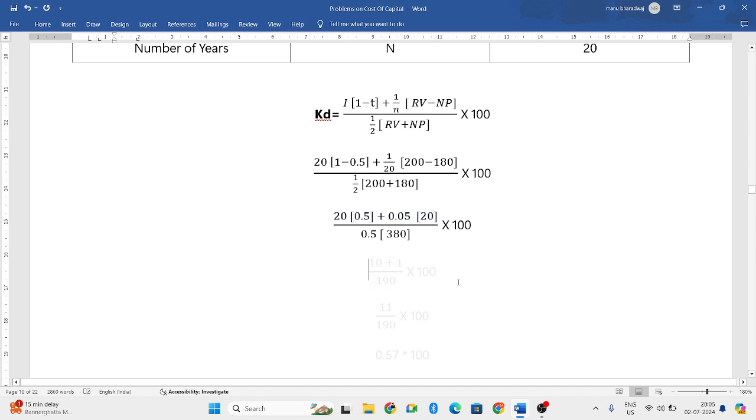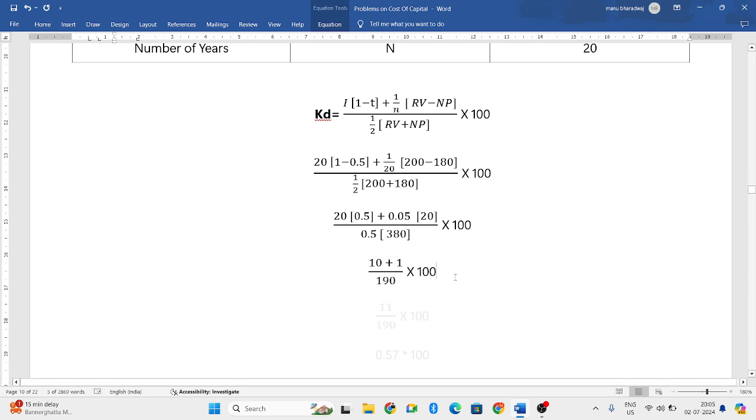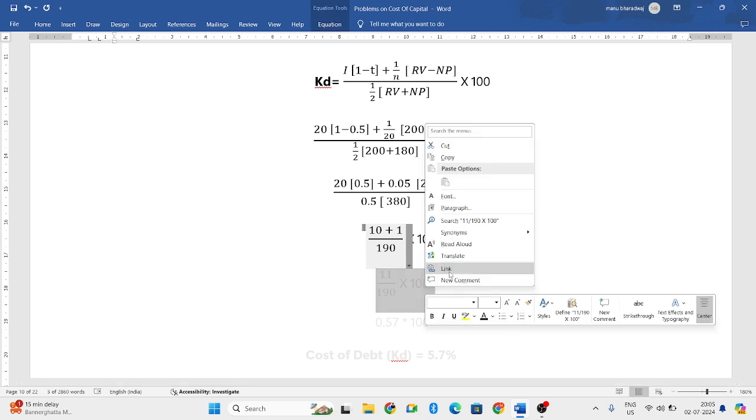When we simplify it further, 20 into 0.5 becomes 10, 0.05 into 20 becomes 1, and 0.5 into 380 is 190. Now 10 plus 1 is 11, 11 divided by 190 into 100.